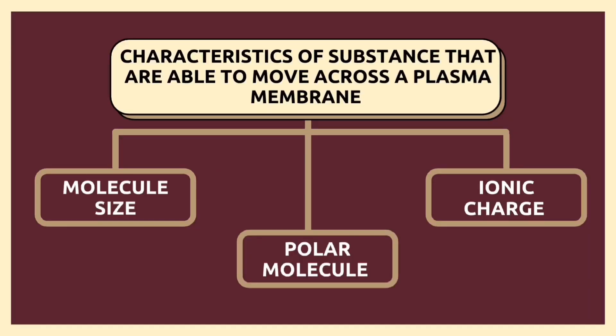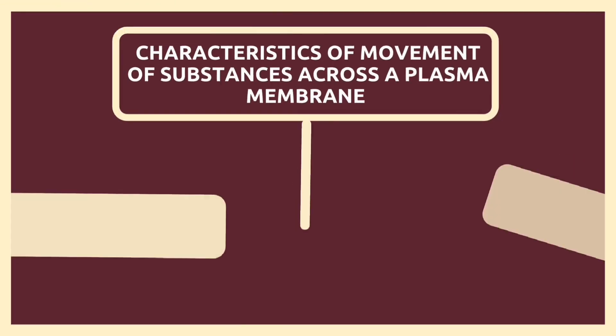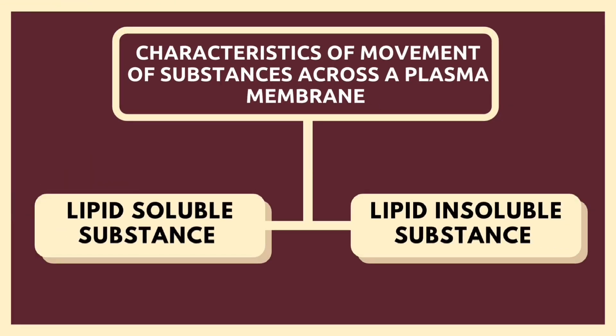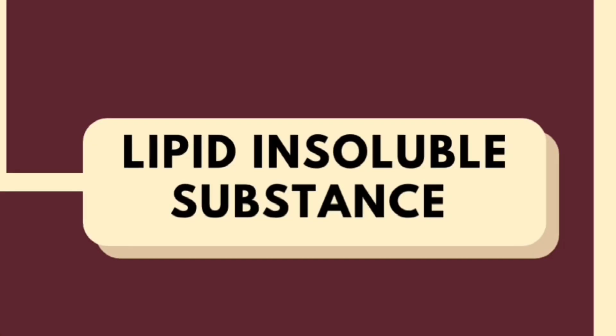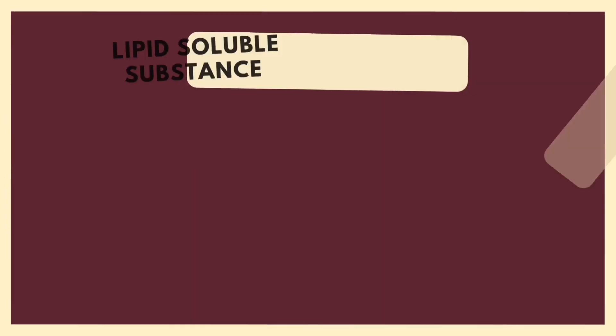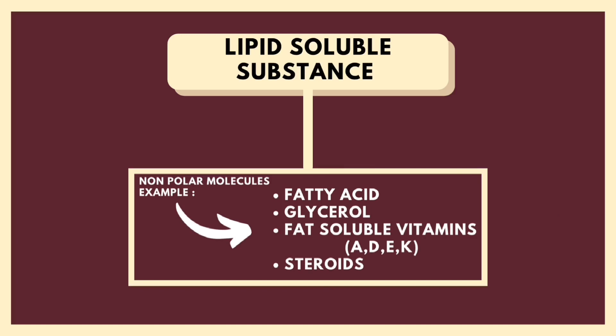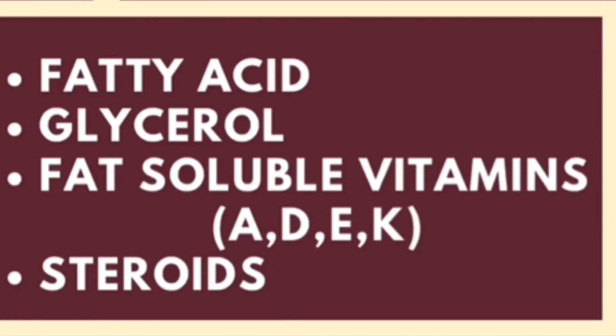The characteristics of movement of substances across a plasma membrane divides into two, which are lipid-soluble substances and lipid-insoluble substances. Lipid-soluble substances consist of non-polar molecules, for example, fatty acid, glycerol, fat-soluble vitamins ADEK, and steroid compounds.